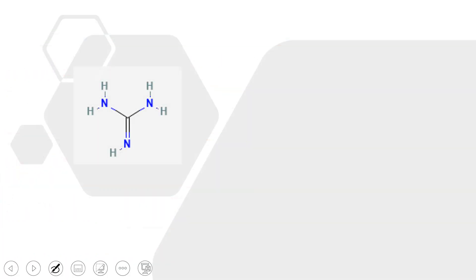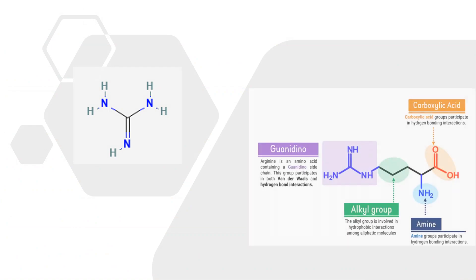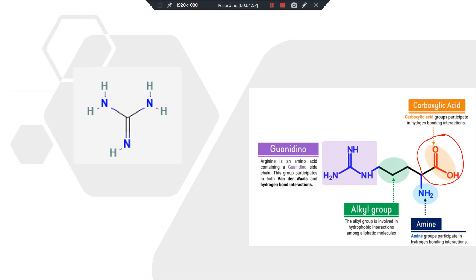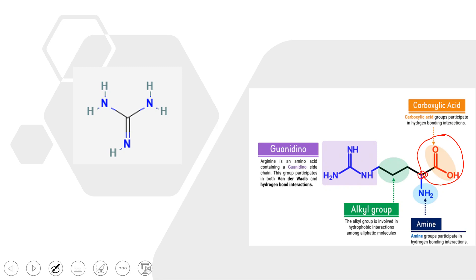The guanidine group consists of NH2, C=NH, and NH2 — three amino groups. In arginine, we have the actual amino acid amino group along with the guanidine group in the R group. The alpha carbon carries a COOH group, an amino group, a hydrogen, and the R group containing the guanidine group — and this guanidine group is what is detected by this test.